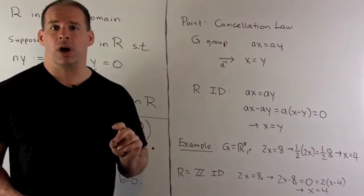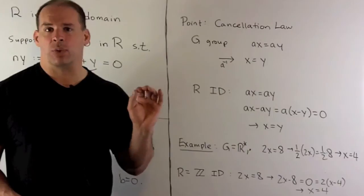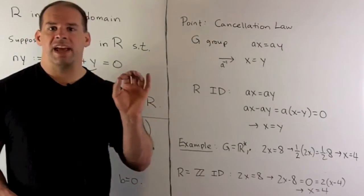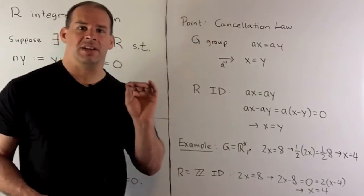Two is not equal to zero. So that's going to mean that x minus four has to be zero, or x equals four. So we still have the cancellation law, we just get to it in a different manner.